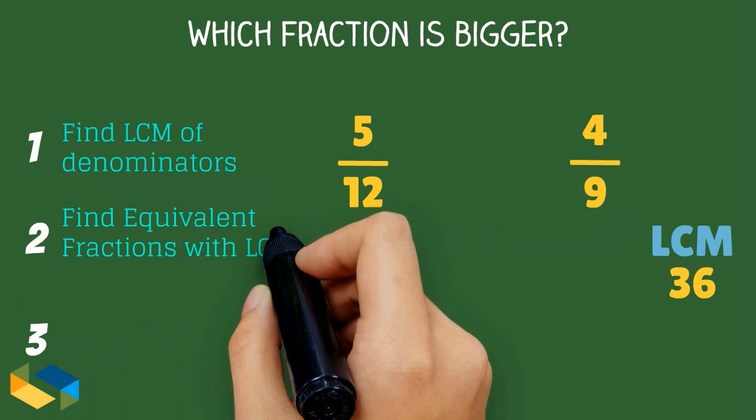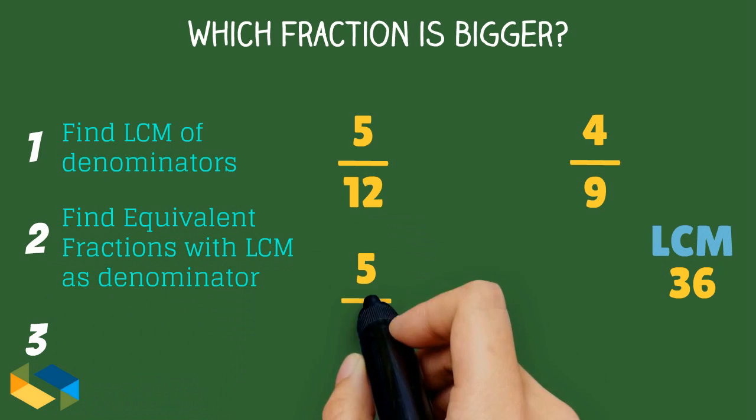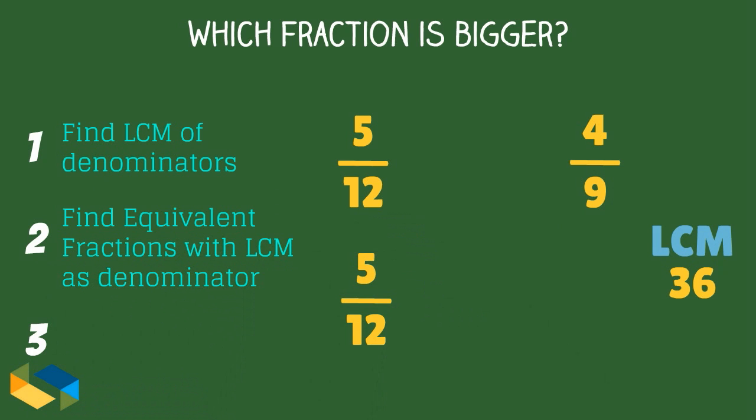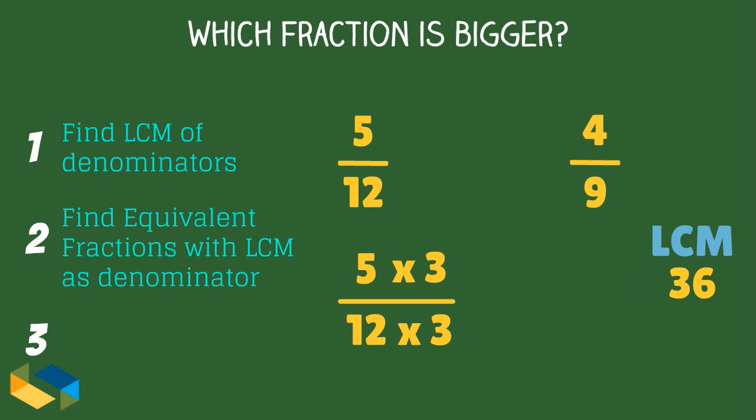Next, we have to create equivalent fractions such that their denominator is 36. In 5 upon 12 we know 12 multiplied by 3 is 36. So, we multiply the numerator by 3 as well.